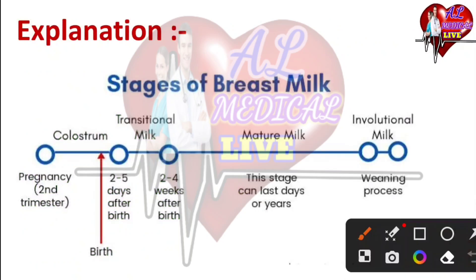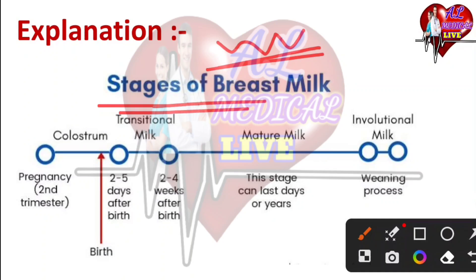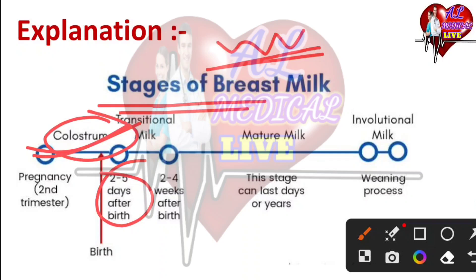This is a very important question about colostrum and breast milk. The first type is colostrum. The second stage: from pregnancy time to 2 to 5 days after the baby's birth, we have colostrum. The transition milk is from 2 to 5 days to 2 to 4 weeks after birth.